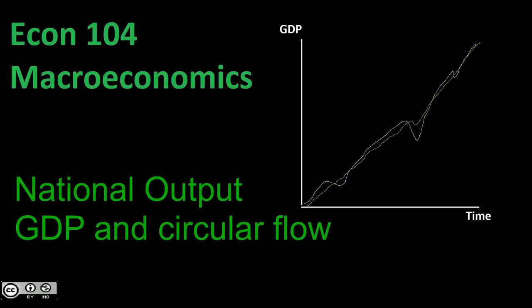Welcome to Econ 104. Today we're going to be taking a look at national output, GDP, and our circular flow. Our first goal is to understand what exactly GDP is and how we're going to calculate it. We're going to take a look at a few different ways to calculate it. Beyond that, what we really want to nail down is our circular flow diagram — our understanding of how money flows through our economy, from our households to our firms, back to our households.